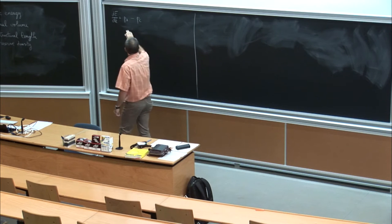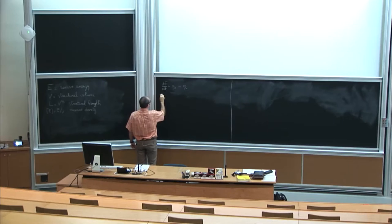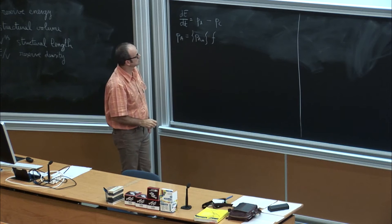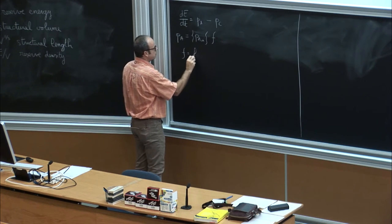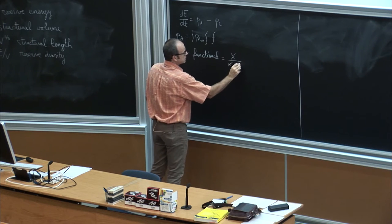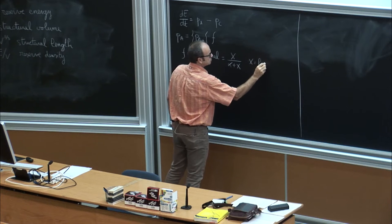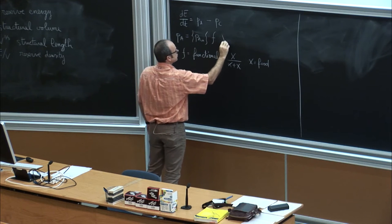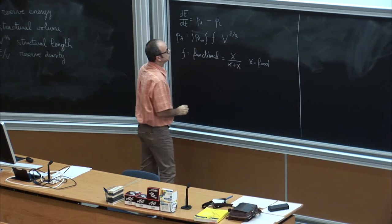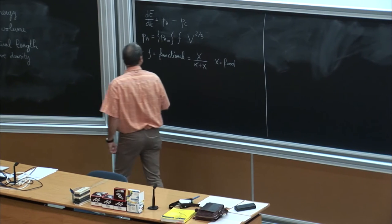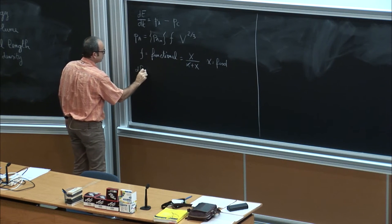Now I will explain what is behind these notations. The assimilation flux is the maximal assimilation flux per surface times a functional response f. For instance, f can be x over (x plus k), where x is food. We multiply this by the surface, which is V to the power two-thirds. This gives the assimilation rate.